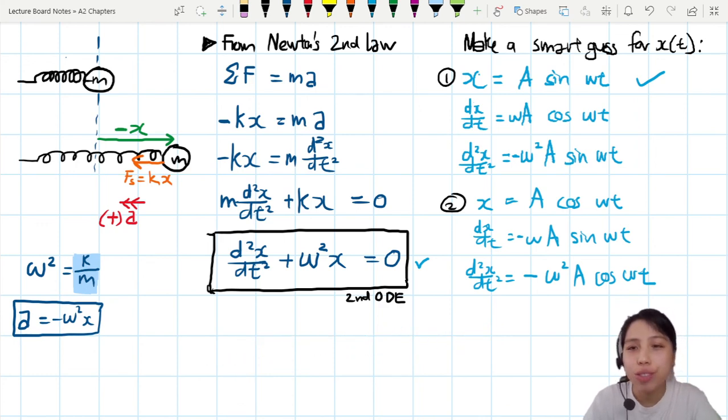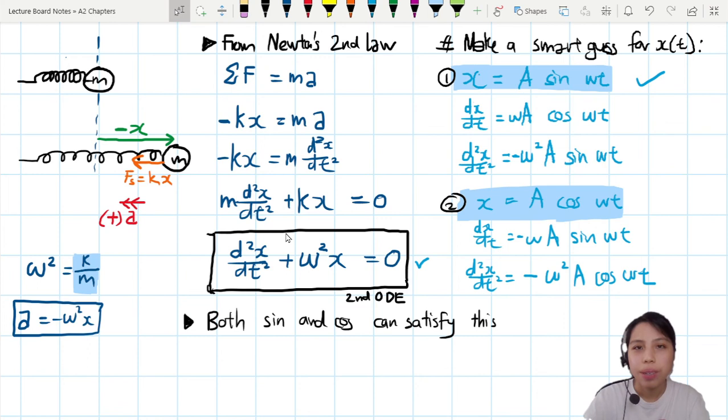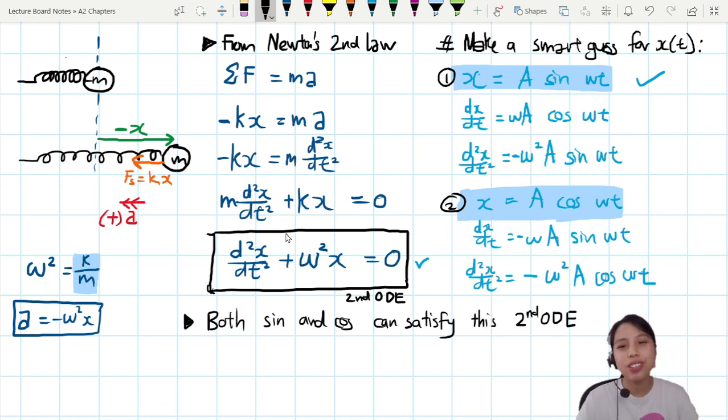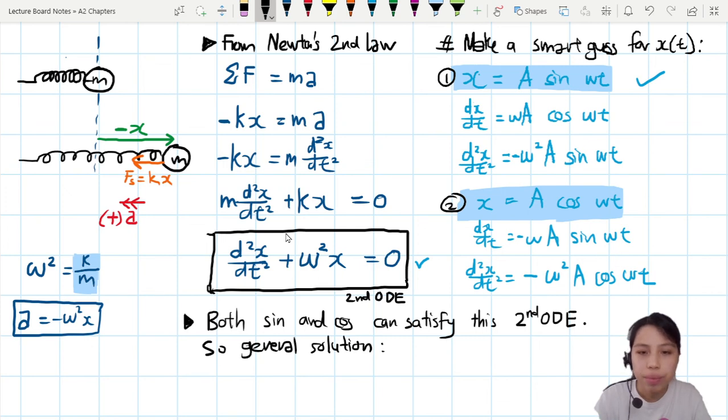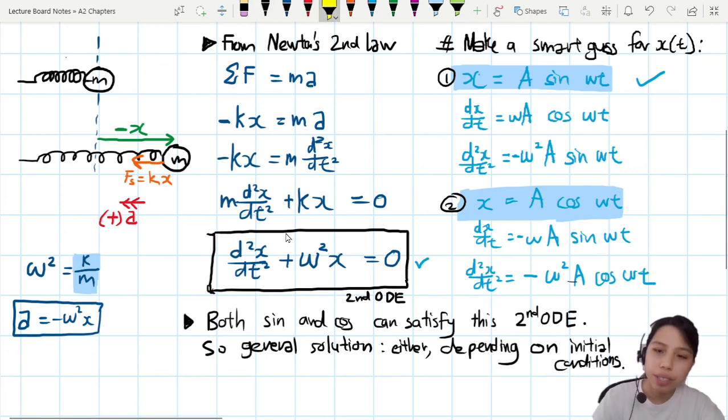So hence, I can conclude now from our smart guesses. Both sine and cos can satisfy this second order differential equation. So this is what we call general solution. So the general solution can be either one of them, really. General solution can be both, either depending on what we call initial conditions. So what is that? What do we mean by initial conditions? I'm kind of blocking my head here.